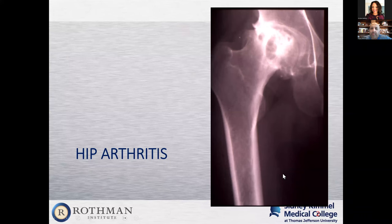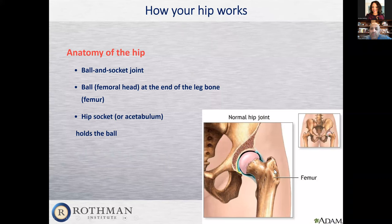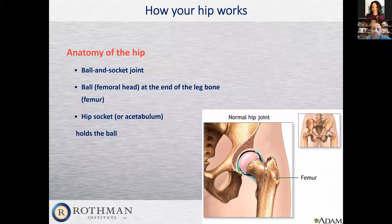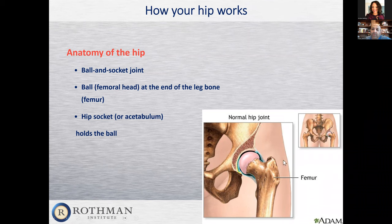So we're going to talk a little about hip replacement first. The anatomy is always important in surgery. The hip joint is the top part of your femur and the bottom part of your pelvis. Your femur is your thigh bone. The ball on top of your femur is the femoral head, and that's the ball of the ball and socket joint. The socket is the pelvis right here, and that articulates to create your hip joint.